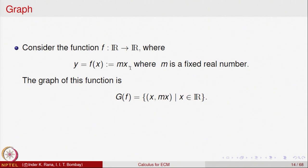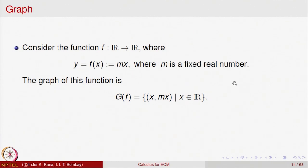f of x is equal to mx, so f of x is denoted by y. One normally writes it as y equal to mx, where m is a fixed real number. One would like to know what is the graph of this function — how do you visualize the graph of this function as a set of points on the plane?